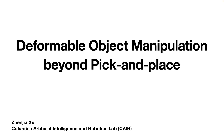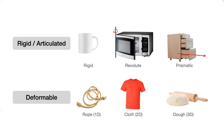Thanks for the invitation. It's my pleasure to be here to share some of my recent works on deformable object manipulation. Most robotic systems focus on rigid objects or articulated objects, like a microwave with a revolute joint or a cabinet with prismatic joints. But as we know, deformable objects are also very common in our daily life — for example, a rope, which can be considered as a 1D deformable object, cloth and dolls as 2D and 3D deformable objects.